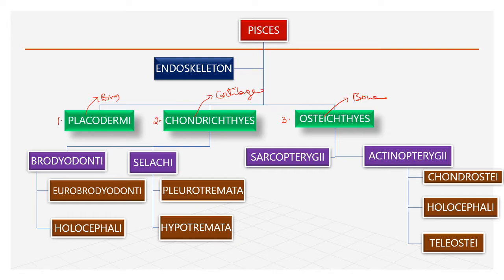In Osteichthyes, there are two subclasses: Sarcopterygii and Actinopterygii. Sarcopterygii is again divided into two groups: Crossopterygii and Dipnoid. Crossopterygii is further divided into Rhipidistia and Coelacanthini.